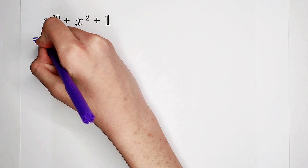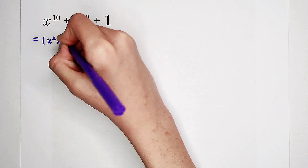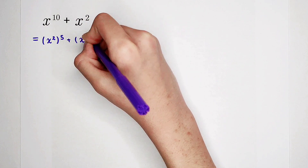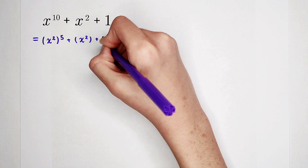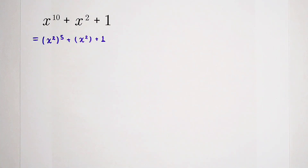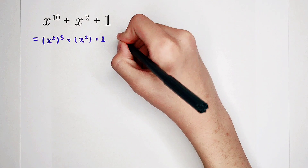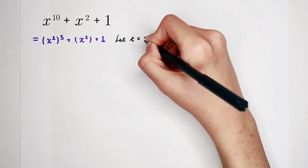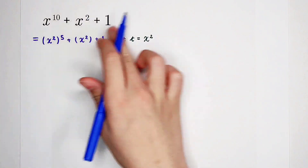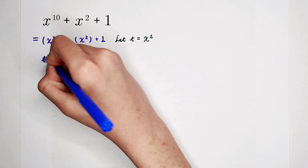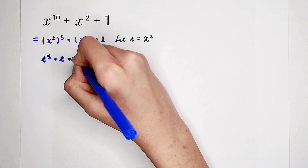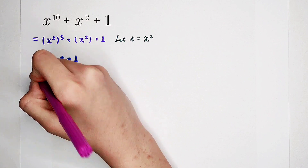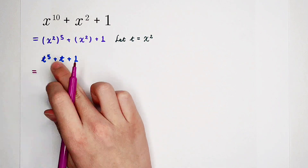So we can rewrite it as x squared, all to the power of 5, then plus x squared, then plus 1. We can let t be equal to x squared. So the original expression can be written as t to the power of 5, then plus t, then plus 1. Of course, here are only three terms: t to the power of 5, t, and 1.